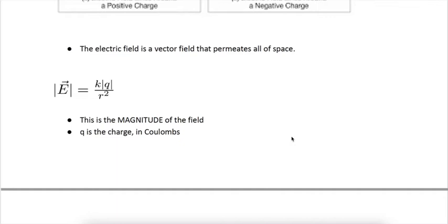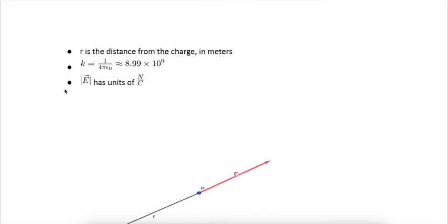So the electric field is a vector field that permeates all of space. One single point charge, sitting alone in an empty universe, creates an electric field everywhere in space. And the magnitude of the field a distance R away is KQ over R squared. Now just like with electric forces, I never ever plug negative charges into this formula. That's absolute value of Q there. This only tells me the magnitude, it doesn't tell me direction. Q, of course, is charge in coulombs. E here is measured in newtons per coulomb.